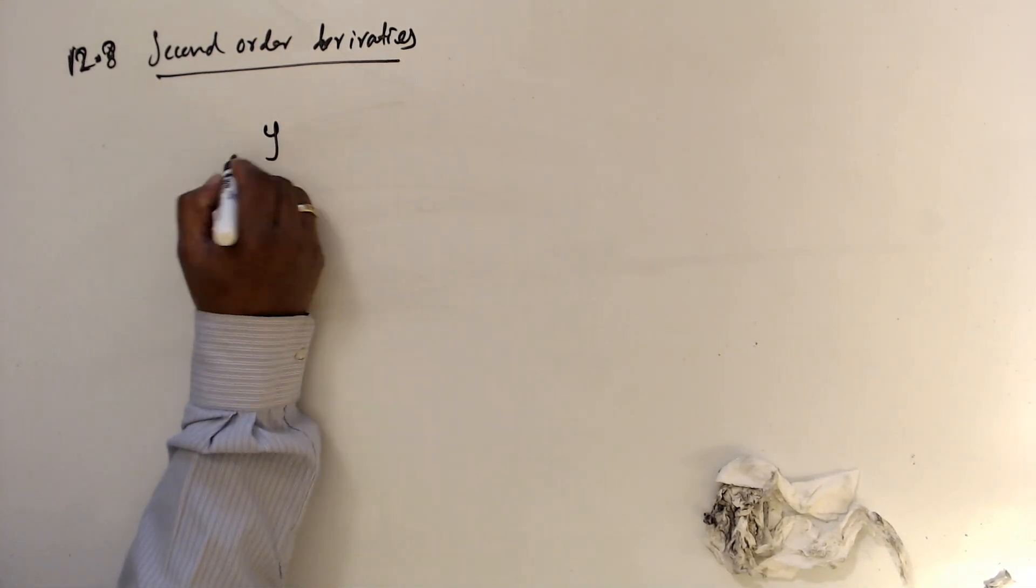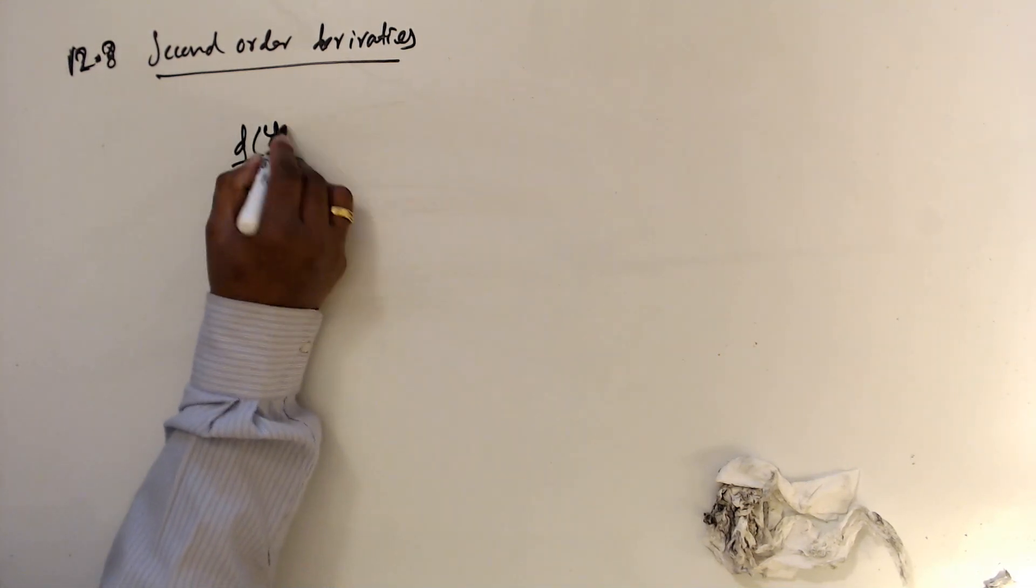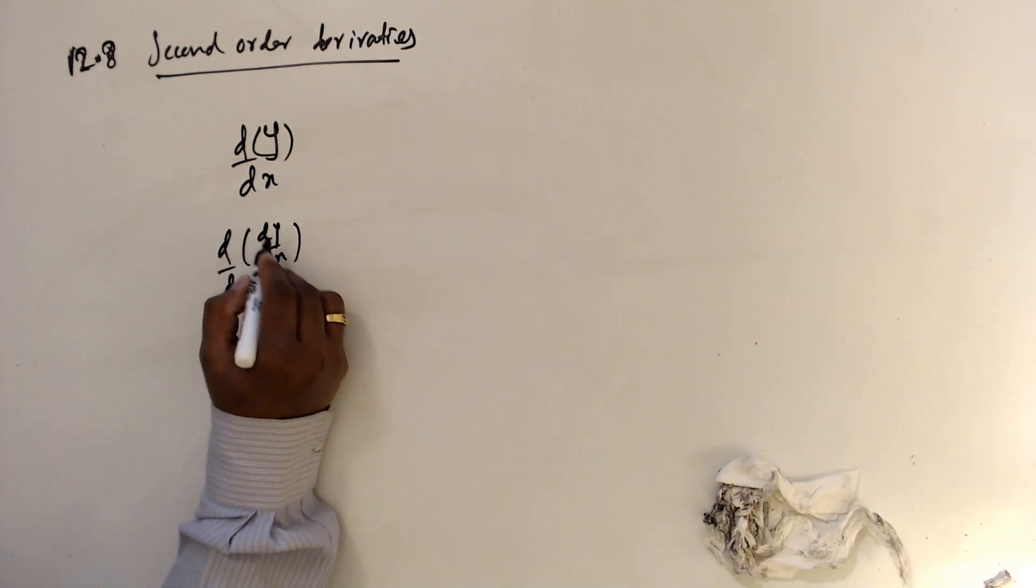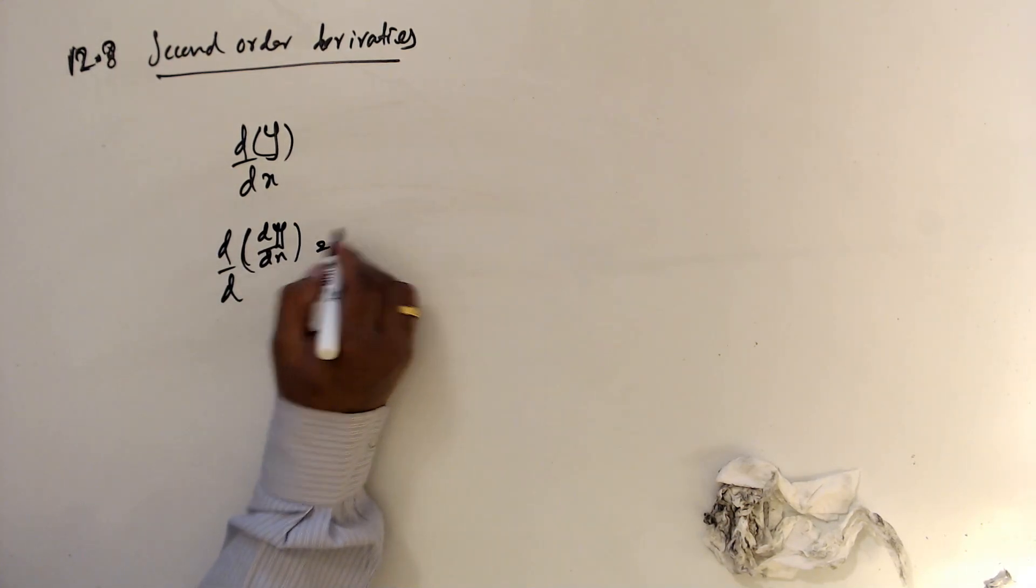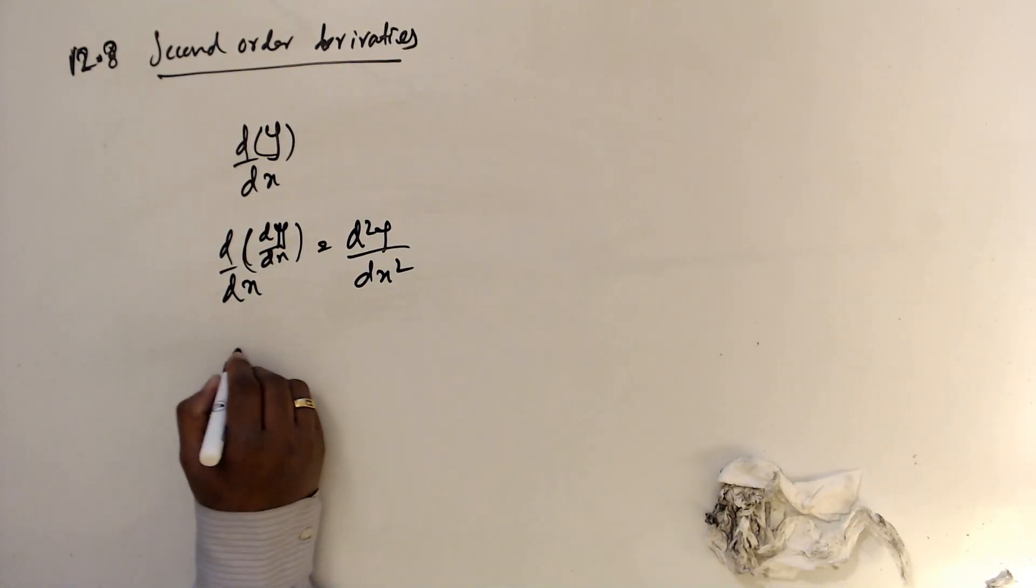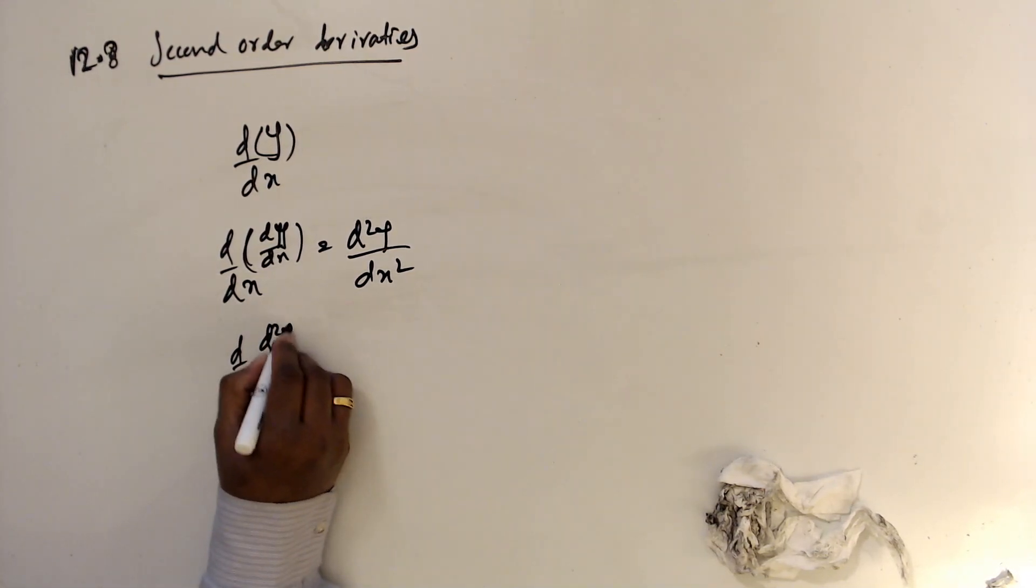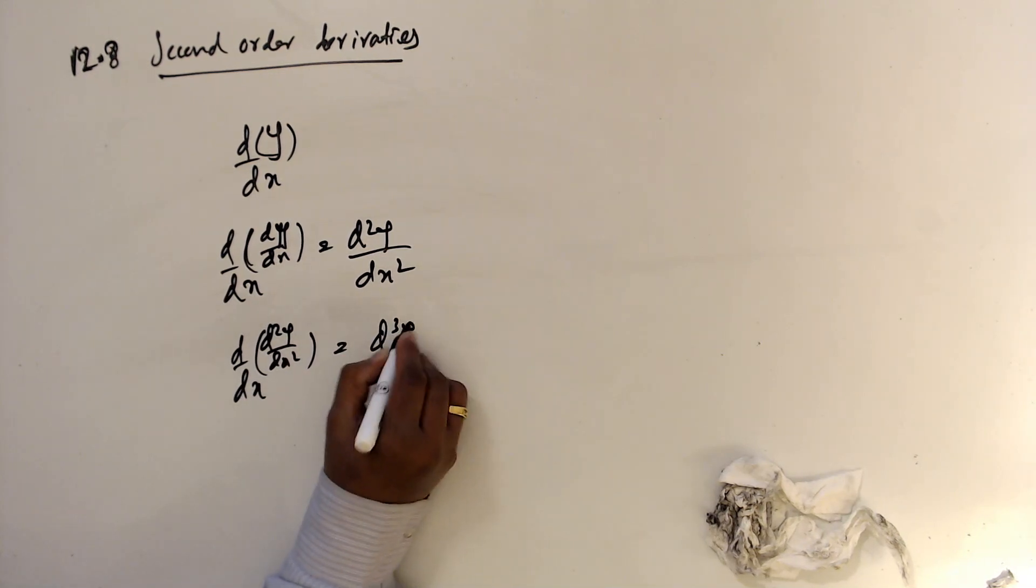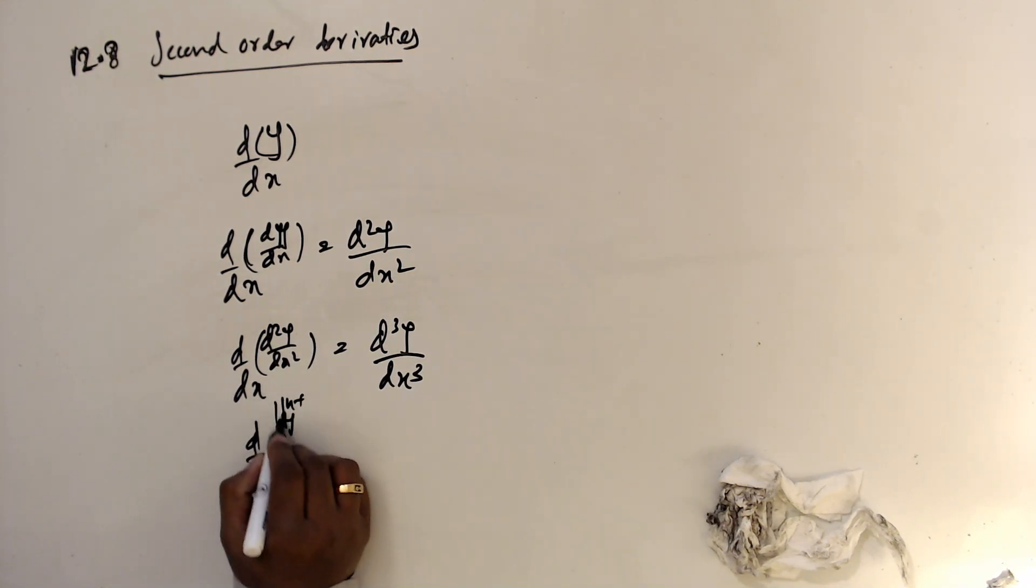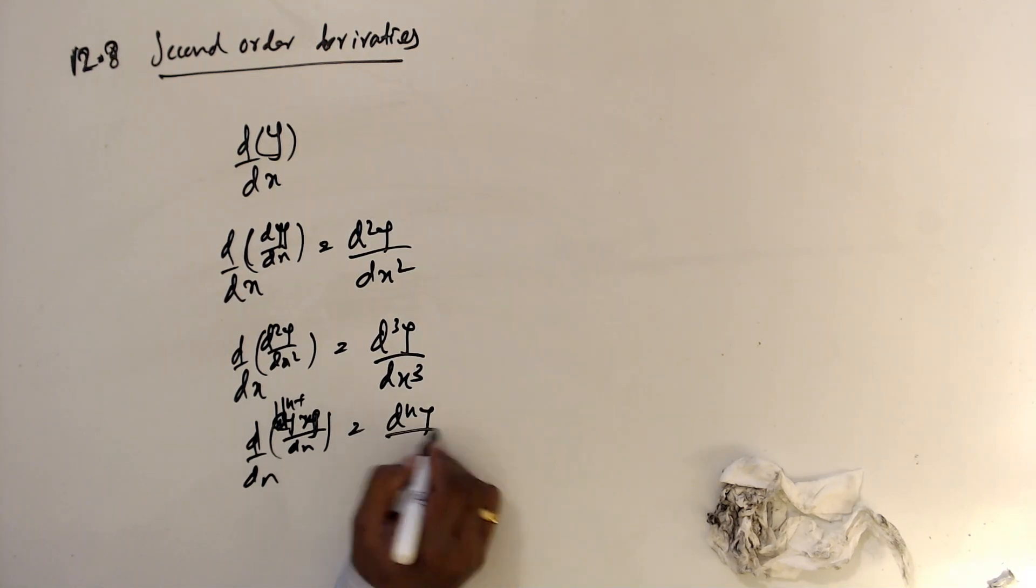Now y you can differentiate d over dx. Then this one you can differentiate again, dy over dx. So this is d squared y over dx squared. Then d over dx of d squared y over dx squared, that is d to the power 3 y over dx cubed. Likewise d over dx of d to the n minus 1 y over dx is d to the n y over dx to the n.